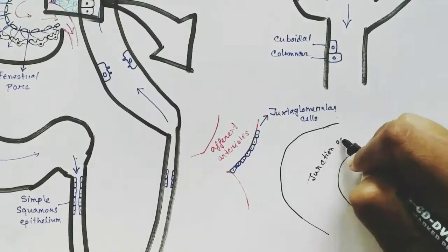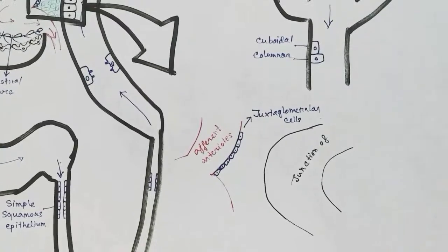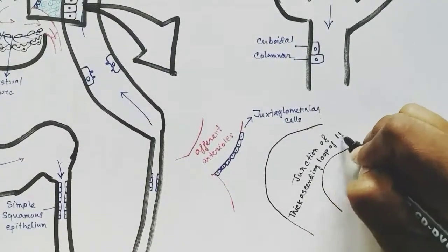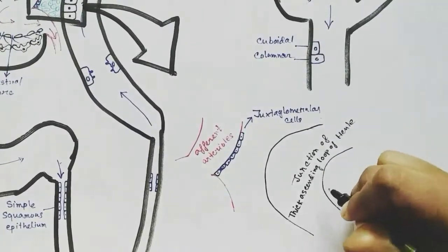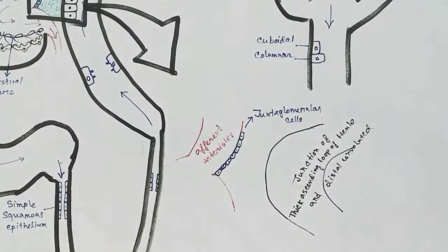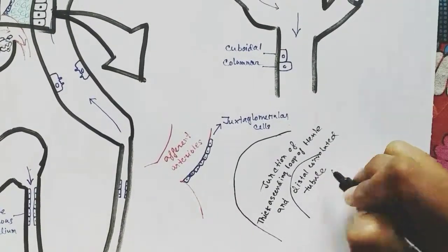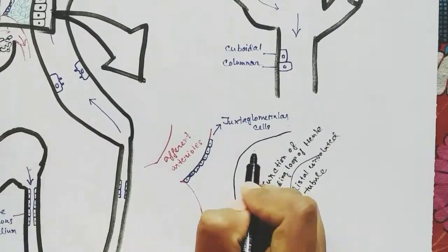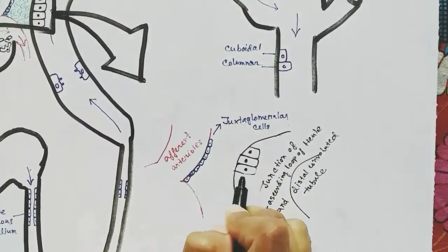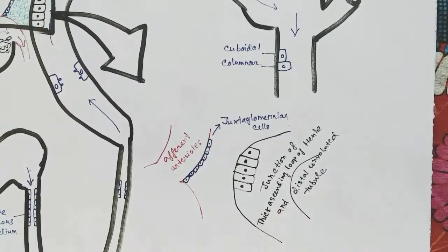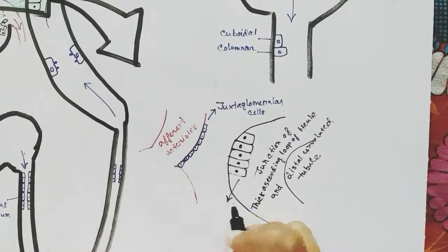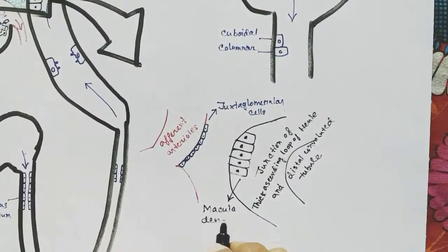This is the junction of the thick ascending limb of the loop of Henle and the distal convoluted tubule. At this region, macula densa cells are present. These are tall in shape and have prominent nuclei.